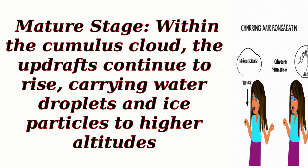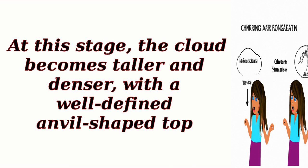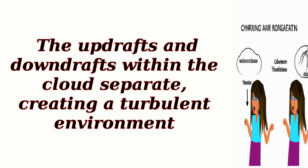Mature Stage. Within the cumulus cloud, the updrafts continue to rise, carrying water droplets and ice particles to higher altitudes. At this stage, the cloud becomes taller and denser, with a well-defined anvil-shaped top. The updrafts and downdrafts within the cloud separate, creating a turbulent environment.